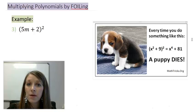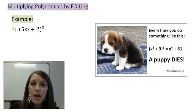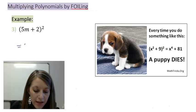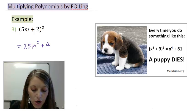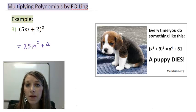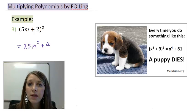Every time you do something like that, a puppy dies. Meaning, if you came up with the answer of this to be 25m squared plus 4, then you've just killed a puppy. You've just completed my ultimate pet peeve, and no pun intended with this cute little puppy over here.